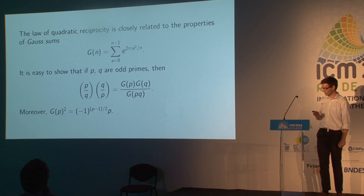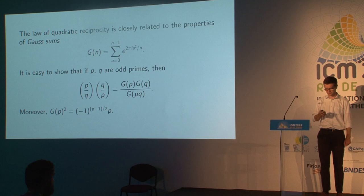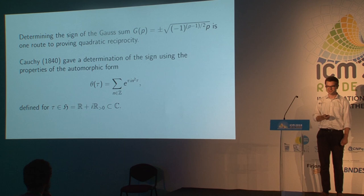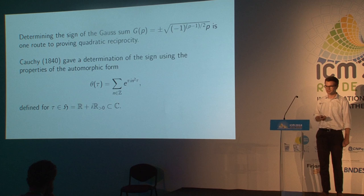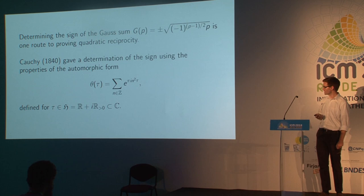Gauss was surely aware of this. He introduced the Gauss sums in his Disquisitiones, but he wasn't at that time able to evaluate the sum exactly — that was something he was only able to do a few years later. What we're going to do is evaluate the Gauss sum after Cauchy using the properties of an automorphic form. It's probably one of the most famous automorphic forms: the theta function. It's the same theta function that was used by Riemann in his proof of the analytic continuation and functional equation of the Riemann zeta function.